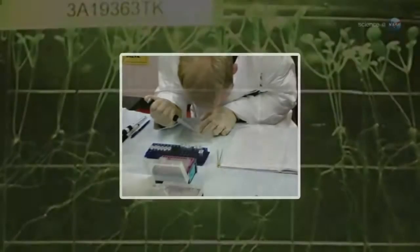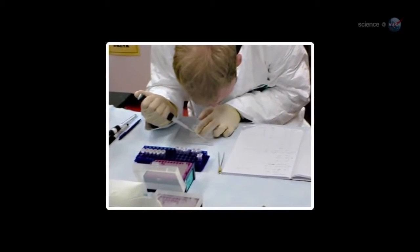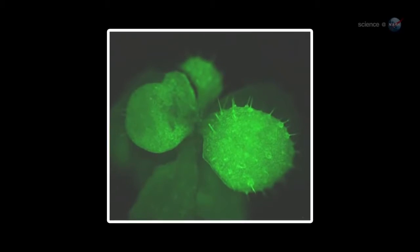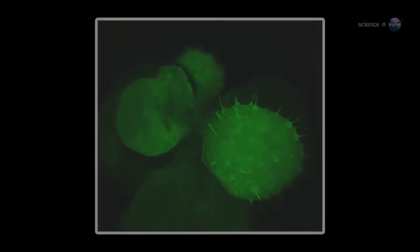Cameras captured growth rates, root patterns, and a strange green glow. We genetically modified the plant to glow when it is under stress, explains Paul. This can tell us a lot about how Arabidopsis adapts to the microgravity environment.